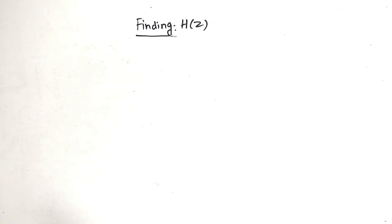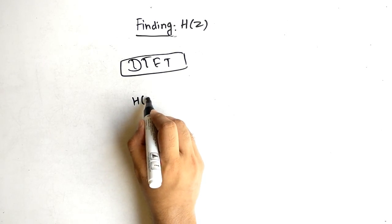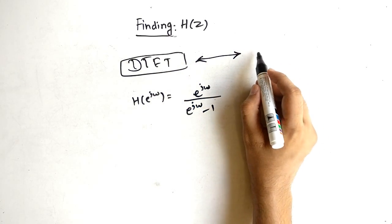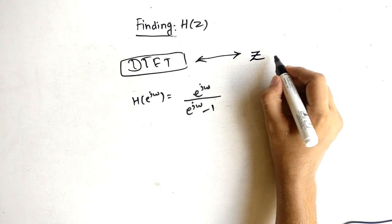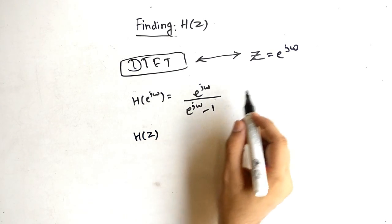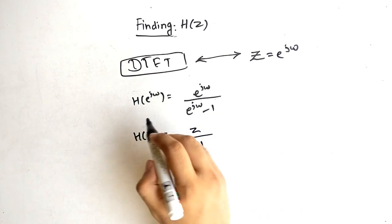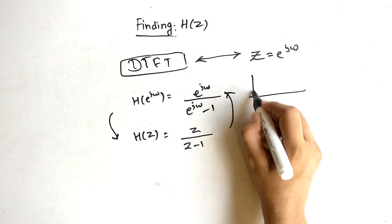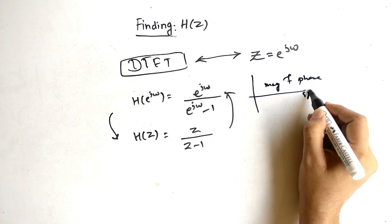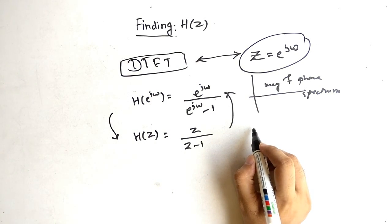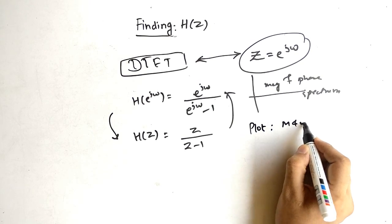Now the DTFT part: if you have H(e^jω) and its value is e^jω / (e^jω - 1), this has a complete resemblance to the Z-transform. Since z = e^jω, substituting gives H(z). This connection is important because from H(z) we can find H(e^jω), and from H(e^jω) we can find the magnitude and phase spectrum — the plots of magnitude vs. frequency and phase vs. frequency.